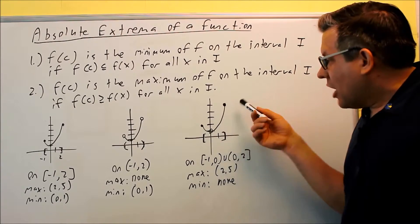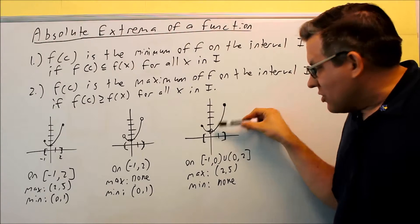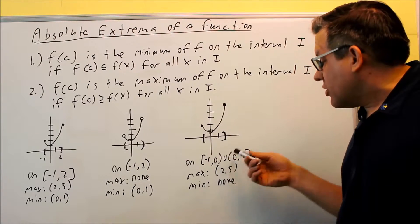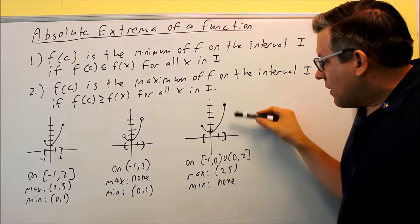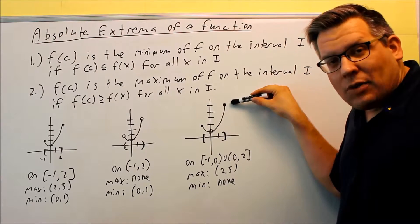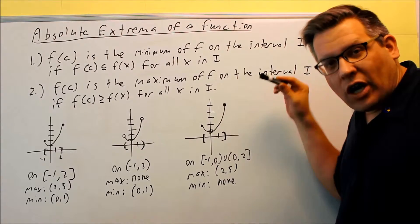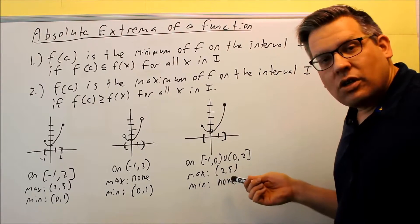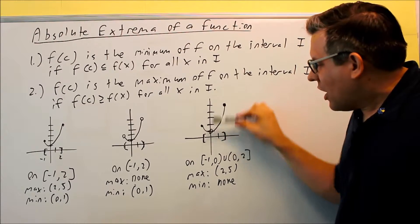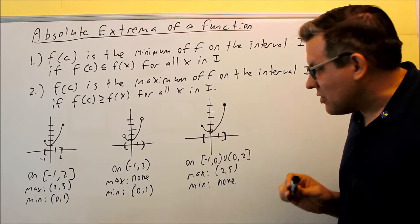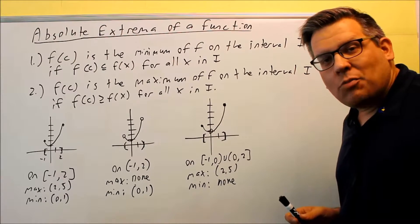This one has endpoints included, except we have an open circle at 0. So the interval is basically negative 1 to 0 and 0 to 2. The max we definitely have, because the highest point on the graph goes to (2, 5). However, there's no absolute min because that's an open circle — we can't get down to the actual lowest point — so there is no absolute min in this case.